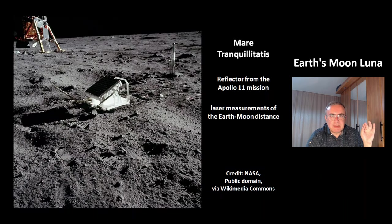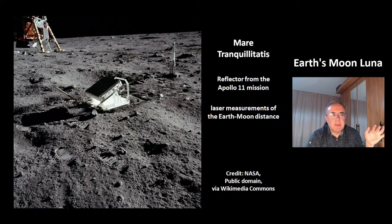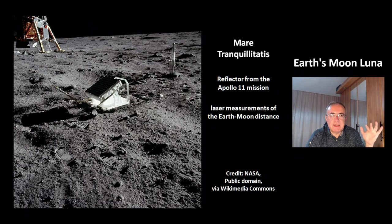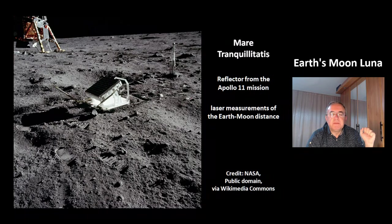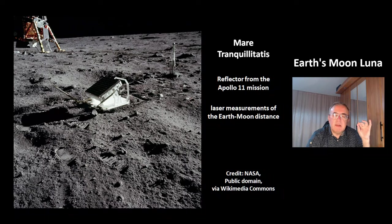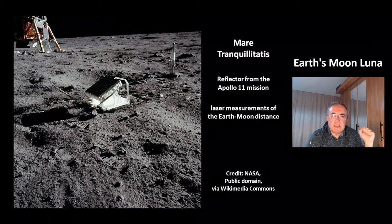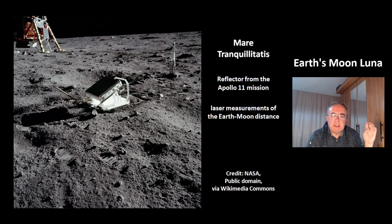This reflector from the Apollo 11 mission is used for laser measurement of the Earth-Moon distance. These measurements show that the Moon is slowly moving away from us by 4 cm per year.